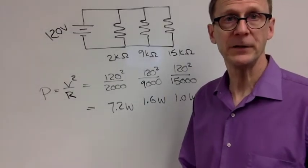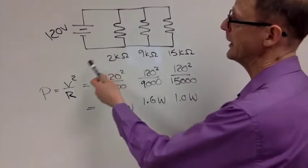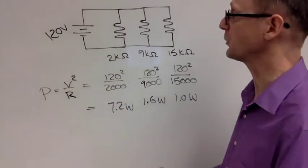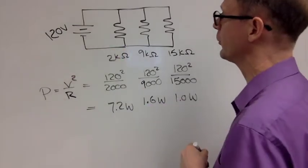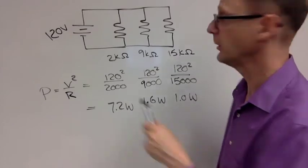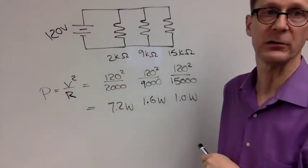Okay, so to figure this out, we're going to look at a schematic diagram of the circuit. We have 120 volts, it's AC. I'm drawing it with a battery symbol here because you're probably more familiar with that, but it's AC voltage, 120 volts. We have three resistors in parallel with each other: 2,000 ohms, 9,000 ohms, and 15,000 ohms.